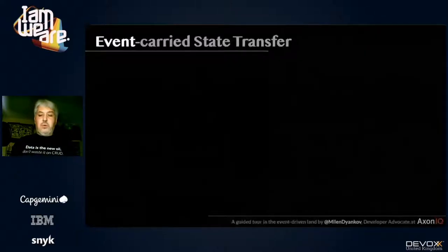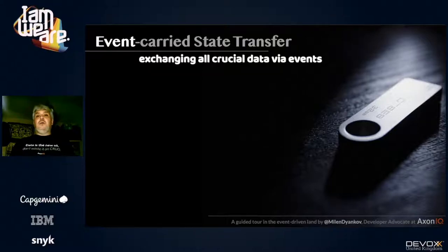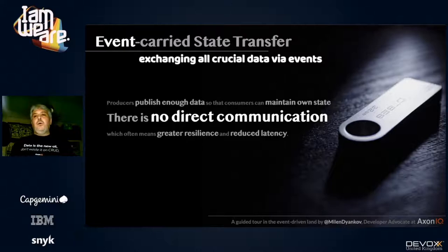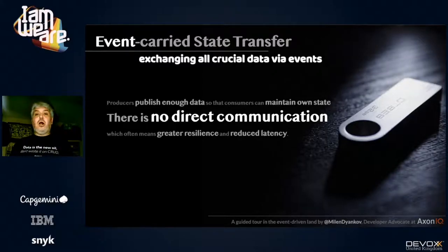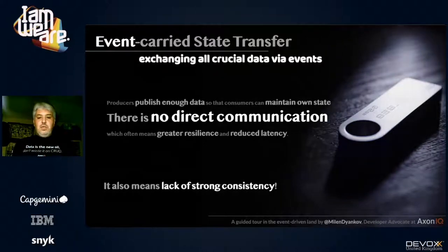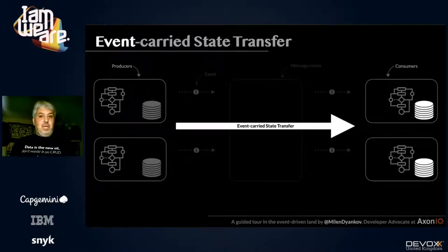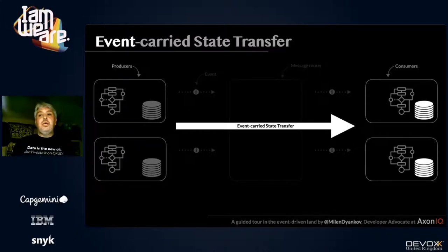Event Carried State Transfer is the next level. It's the same thing, except instead of sending a short notification, you send all the crucial data together with the event, basically saying: 'That's everything I know about this fact — you deal with it.' This helps you avoid direct communication between components. You send the event with all the data; no one calls you asking for more. It gives you greater resilience and reduces latency — at the cost of strong consistency. Consumers build a local copy of the data, which doesn't have to be an exact copy.